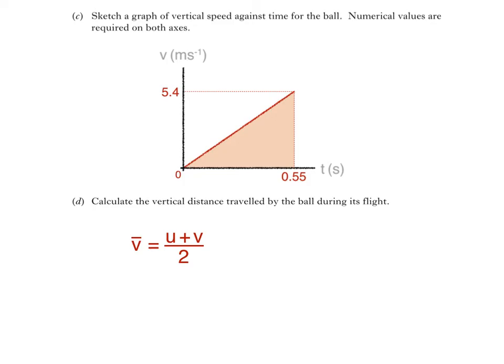Now, normally, we wouldn't use d equals v times t to calculate vertical distance, because the speed v is continually changing. But we can use it if we know the object's average speed, which we write as the letter v with a line above it, known as v-bar. This gives us a vertical distance of 2.7 times 0.55, which is 1.485 metres, or 1.5 metres to two significant figures.